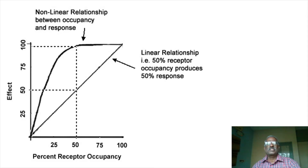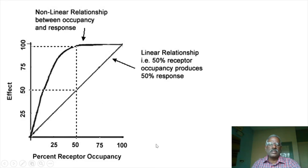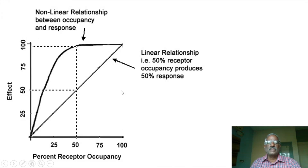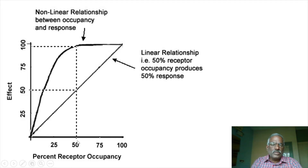If you have any drug receptor, it will be very responsive. The linear relationship is directly proportional. If you have a percentage of receptors occupied on the x-axis, you can see the effect on the y-axis. There will be 100% of the response. This is non-linearity.